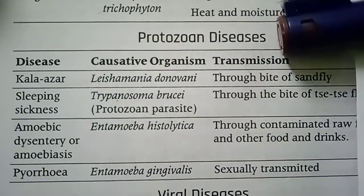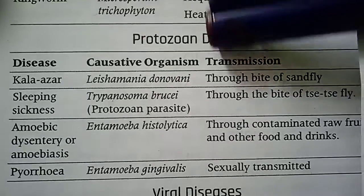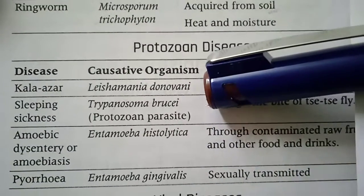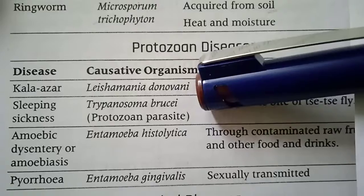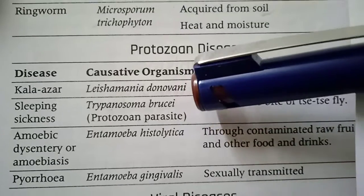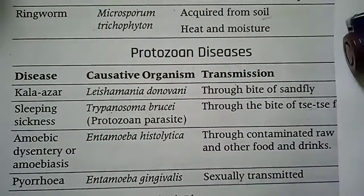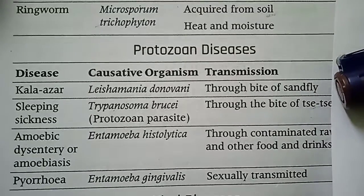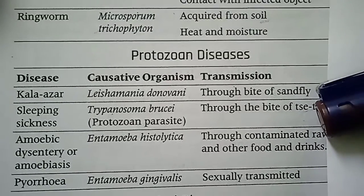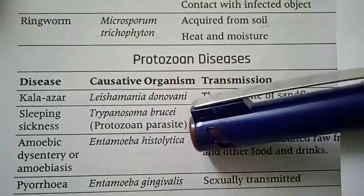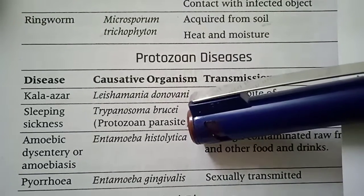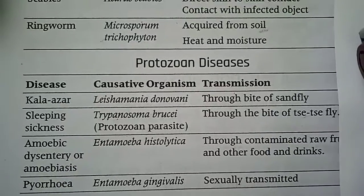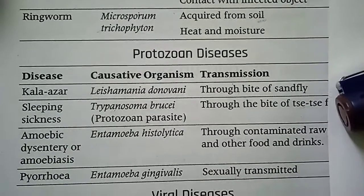Protozoan diseases: The first is Leishmaniasis — transmission through the bite of a sandfly. The second is Sleeping sickness — causative organism is Trypanosoma brucei, a protozoan parasite, transmitted through the bite of the tsetse fly.